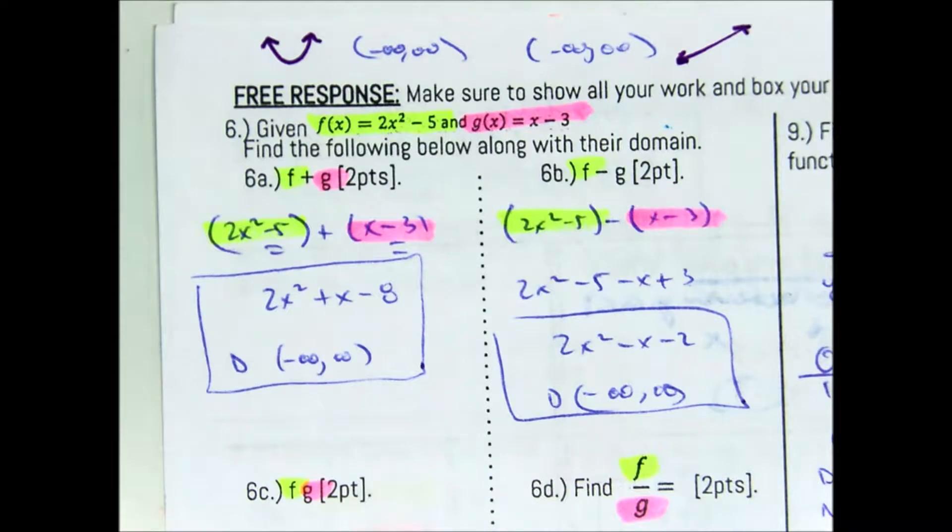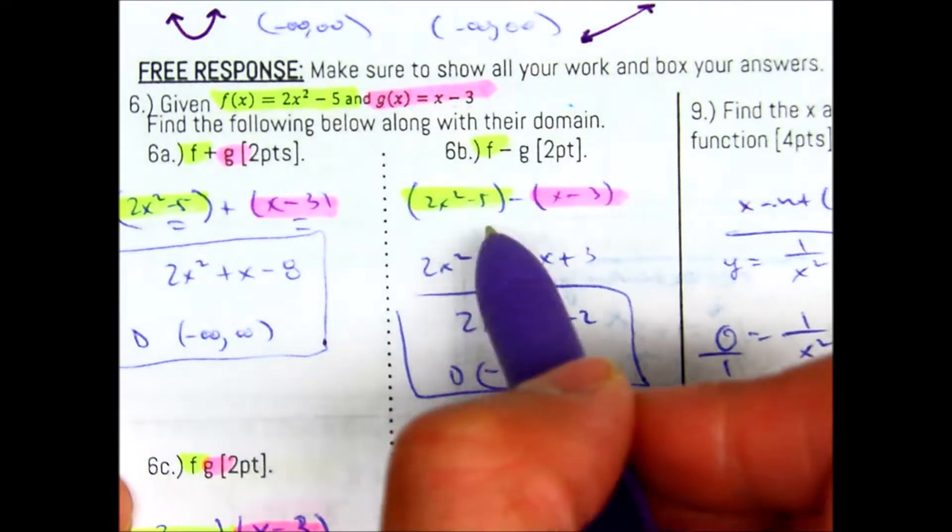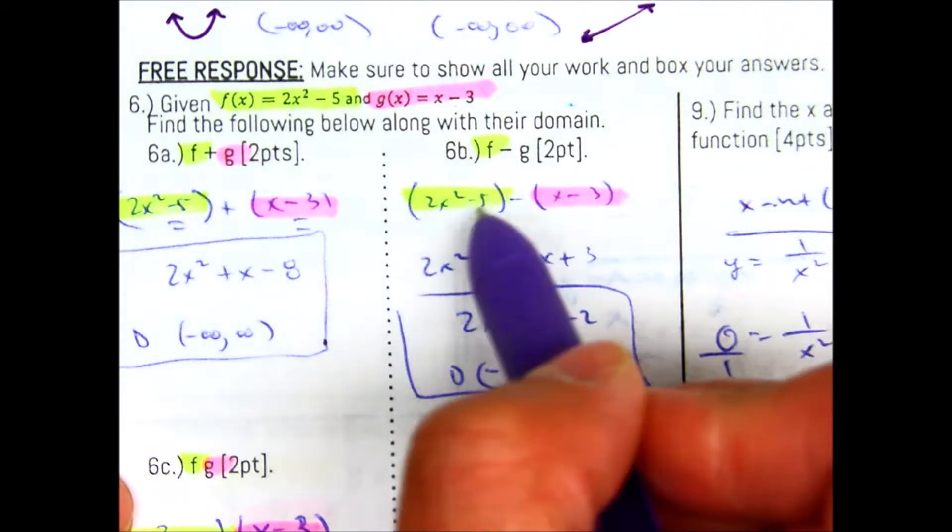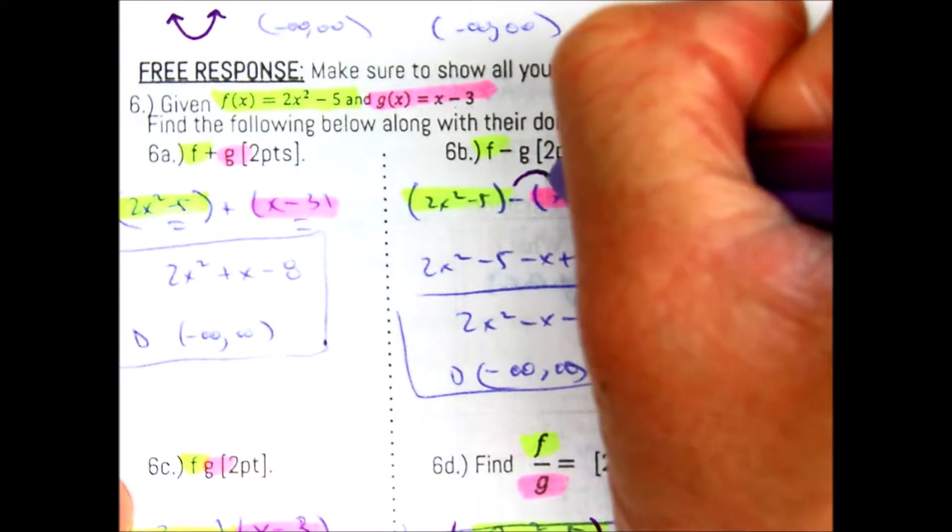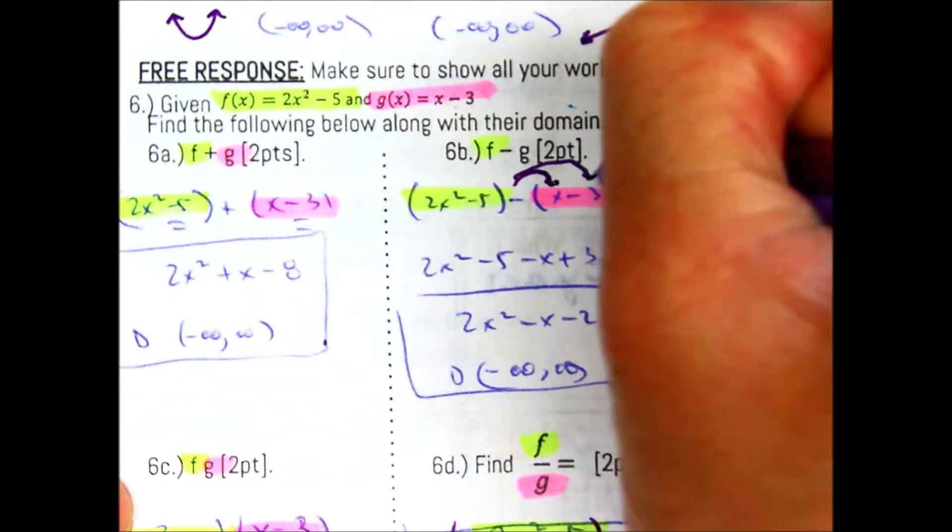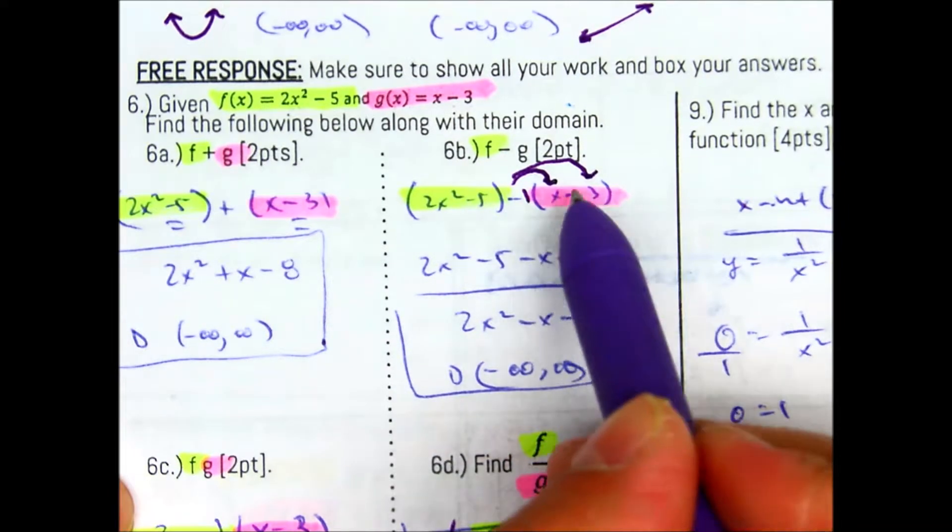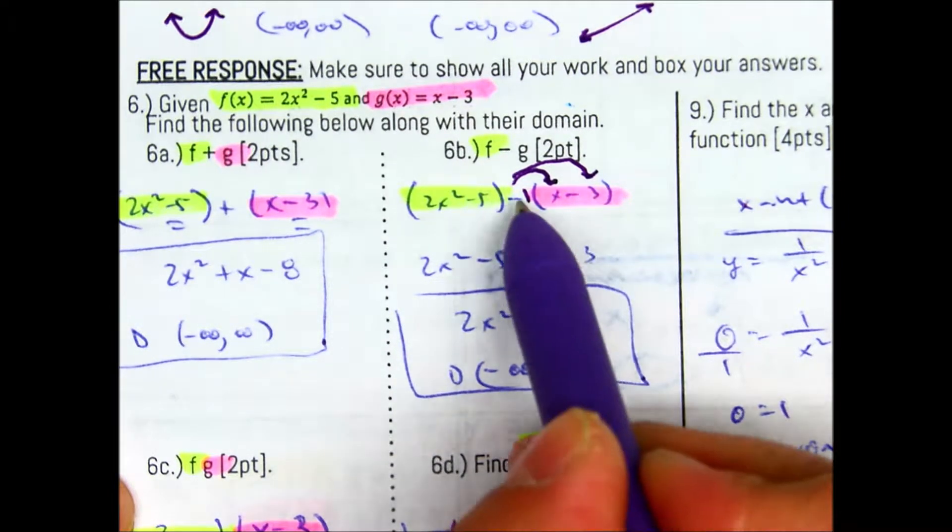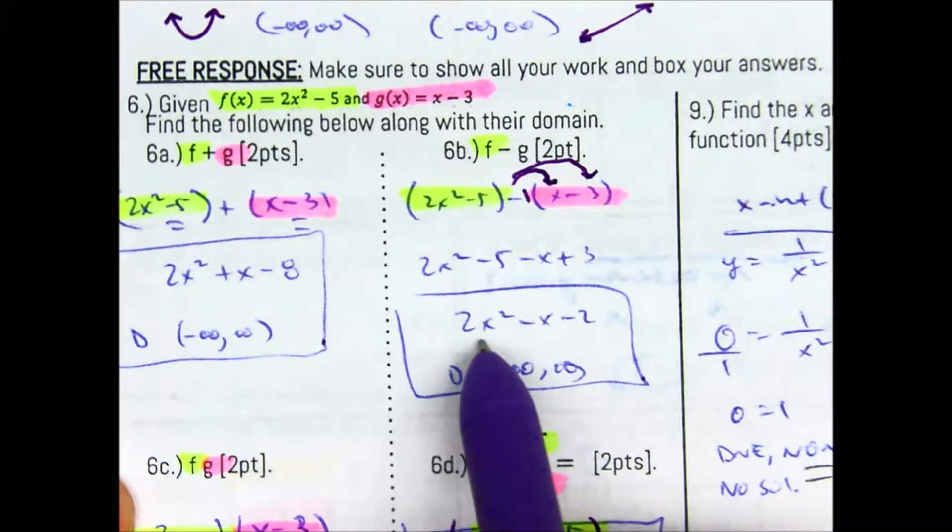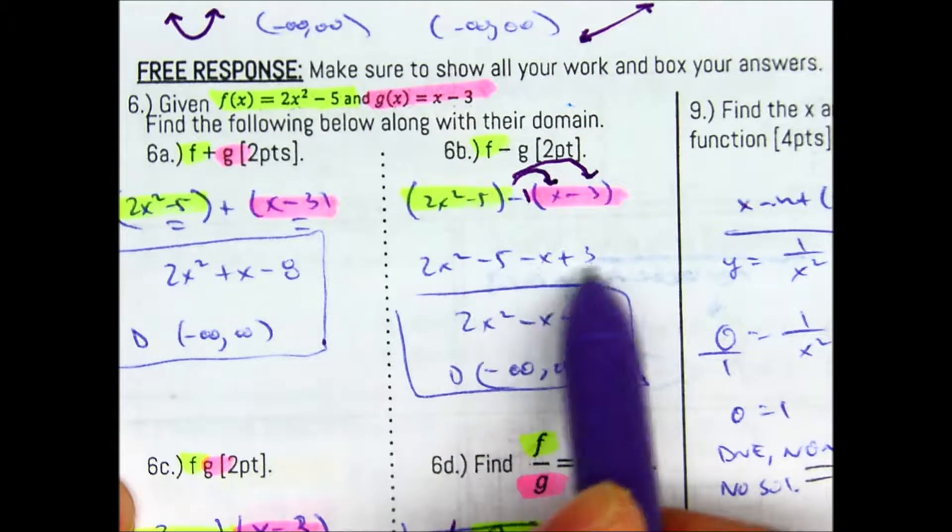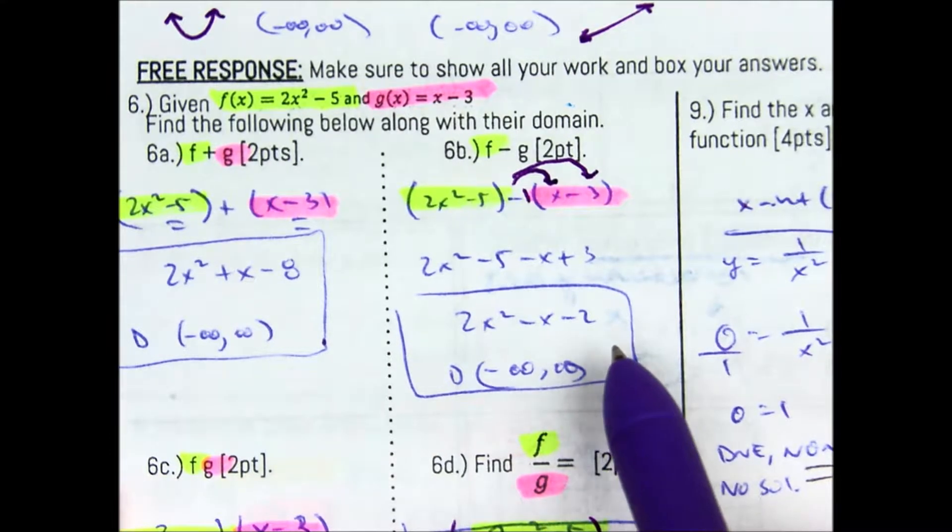So to get the full credit for this problem, it would be the domain with negative infinity to positive infinity. Let's look at B. Now, look at what happens if you don't put these in parentheses. 2x squared minus 5 and x minus 3. You're going to have to distribute that negative sign. Another way of thinking about it is a negative 1. So it's negative 1 times x gives you negative x, and negative 1 times negative 3 gives you a positive 3. You combine like terms, you'll get 2x squared, negative x, and then minus 2. Same thing. You're looking for the least restrictive domain. Since they're the same, then you'll have negative infinity to positive infinity.